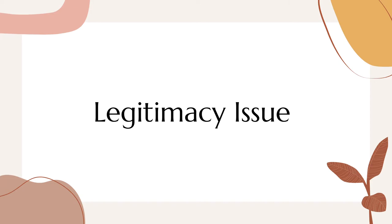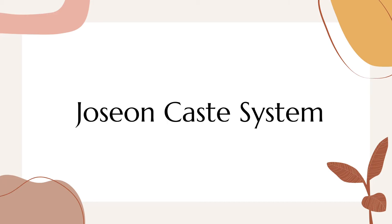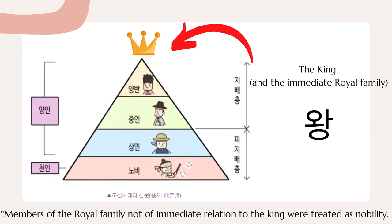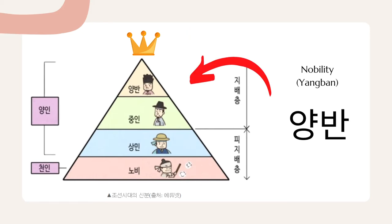To understand why, we have to look at the history of family names in Korea. During the Joseon dynasty, Korea had a caste system similar to that of India. Society was divided into classes. At the top of the pyramid was obviously the king. Below him were the nobility class called Yangban. The Yangban were exempt from paying taxes aside from property tax and had no restrictions in attaining high-ranking government jobs.